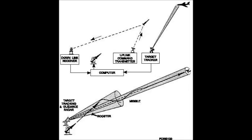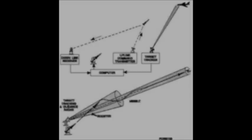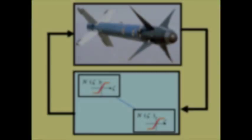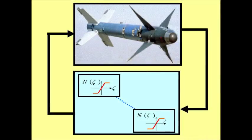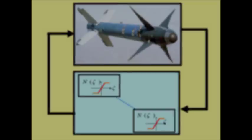In the event that the position that it is in is not the position that it wasn't, the system has acquired a variation, the variation being the difference between where the missile is and where it wasn't. If variation is considered to be a significant factor, it too may be corrected by the GEA.